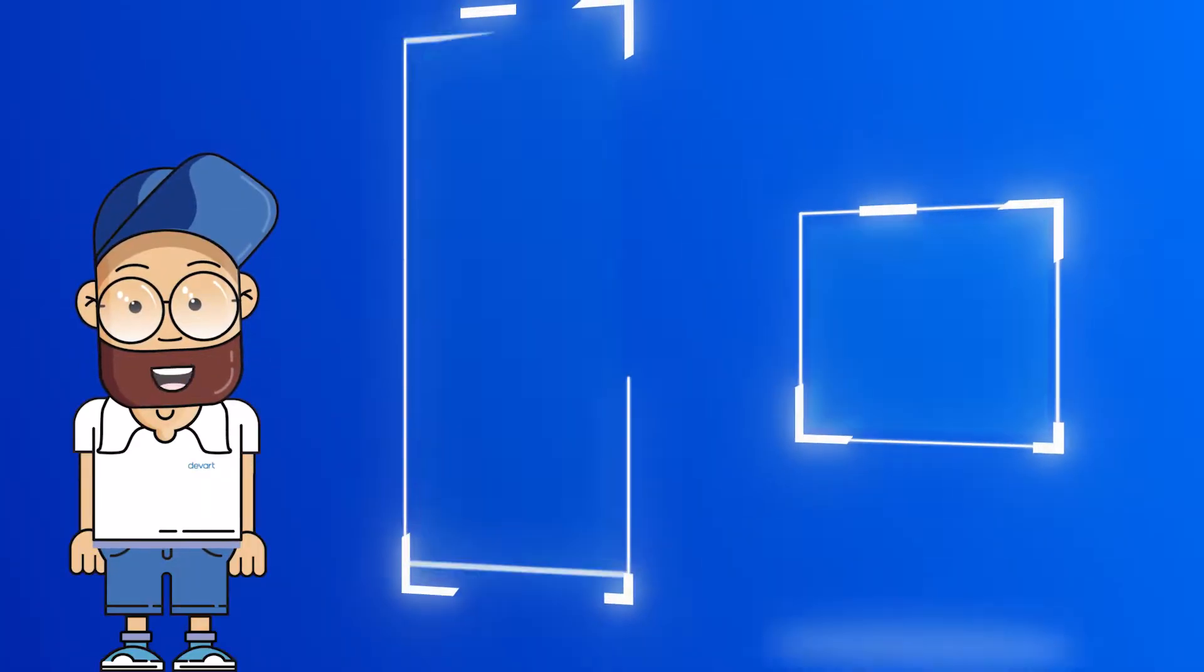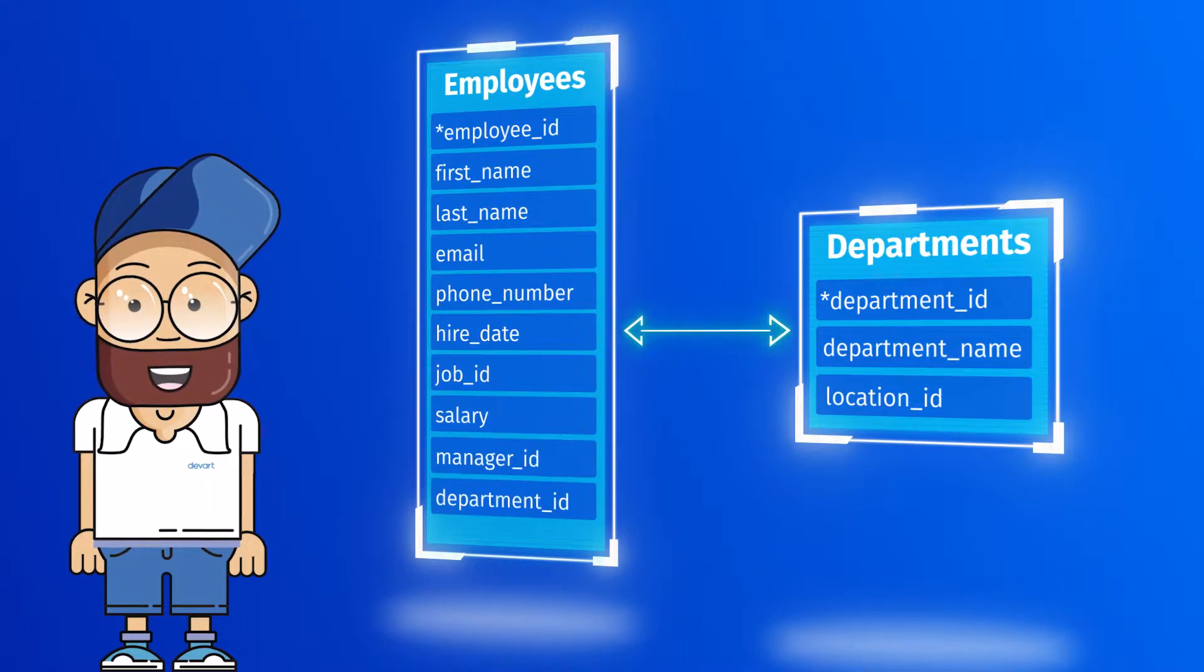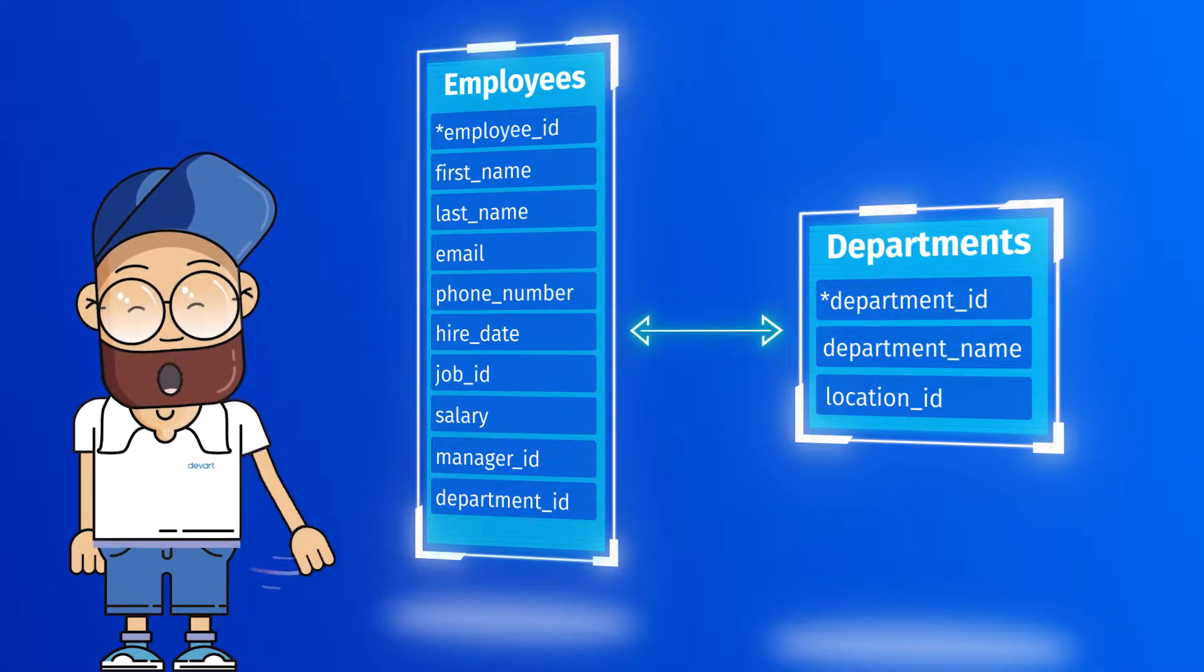To illustrate our worked examples, we'll create two related tables, employee and department, and populate them with data. Visually, the database model will look like this.